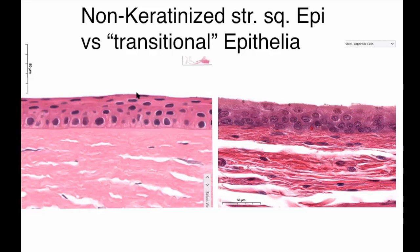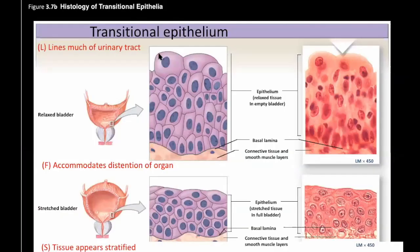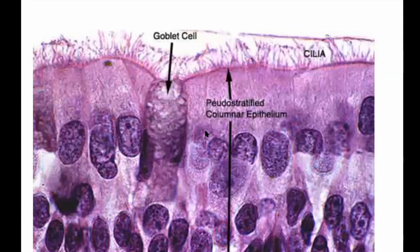Here's another sample of non-keratinized stratified squamous — like the cornea of your eye — where top cells look flat and lower cells look cuboidal, confirming it's stratified squamous. There's also transitional epithelia, which looks a bit like stratified squamous but isn't. Transitional epithelia can stretch and is found specifically in the ureter and bladder — the urinary tract — allowing those organs to distend without damaging the epithelial layer. When the bladder is empty the cells are bunched up; when full they stretch out.